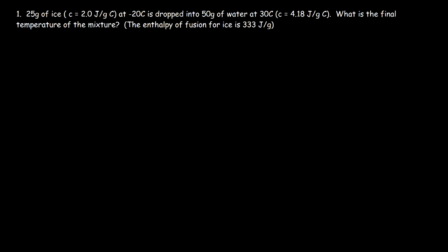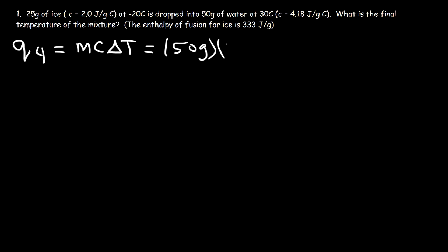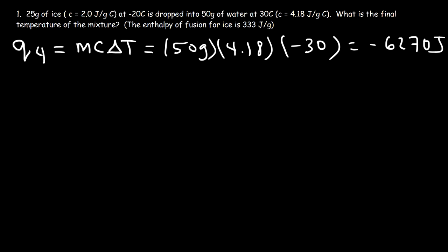What I'm going to do is calculate how much energy will be released if the hot water sample goes from 30 to zero, just before it freezes. So I'm going to calculate Q4, which is MC delta T. The mass is 50 grams, the specific heat capacity is 4.18 joules per gram per Celsius, and the change in temperature going from 30 to zero is negative 30 degrees Celsius. So 50 times 4.18 times negative 30 is negative 6,270 joules.